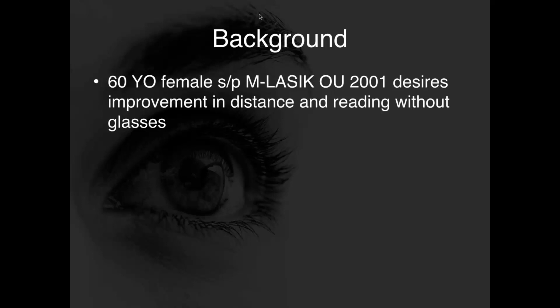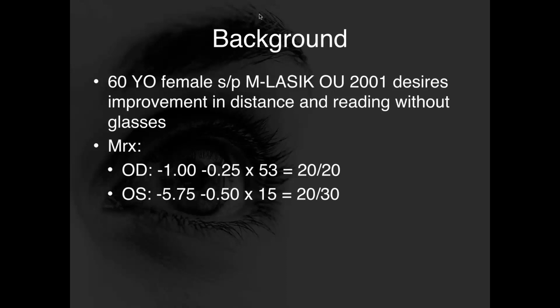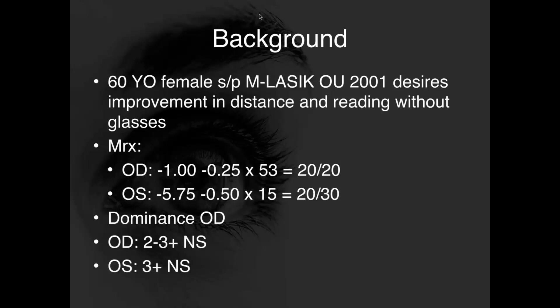This is a 60-year-old female who presented after myopic LASIK over 15 years ago, looking for improvement in distance and reading vision. Currently in the right eye she's minus one, and in the left eye, with a large myopic shift, minus 5.75 with minimal cylinder. Her right eye is dominant, and she has two-to-three plus nuclear sclerosis on the right and three plus on the left.